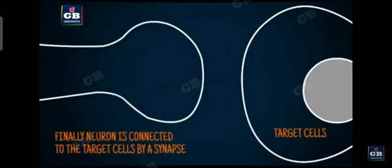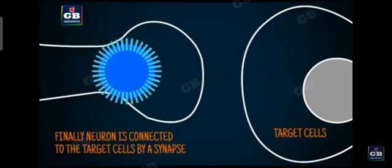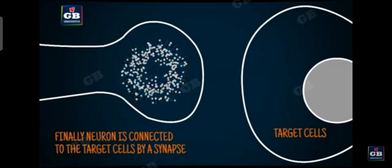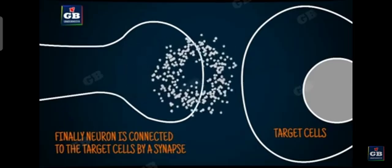So finally, at the end, the neuron is connected to the target cells. What are the target cells? They can be either muscles or glands. So at the end, the neuron is connected to the target cell by a synapse.